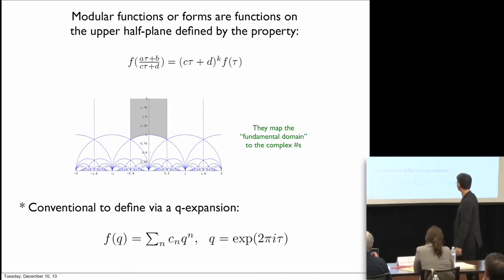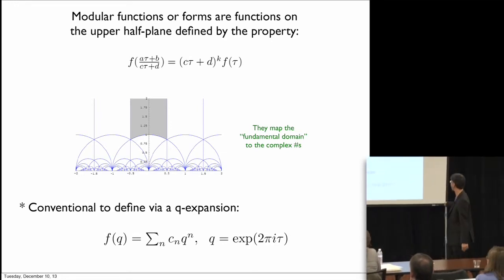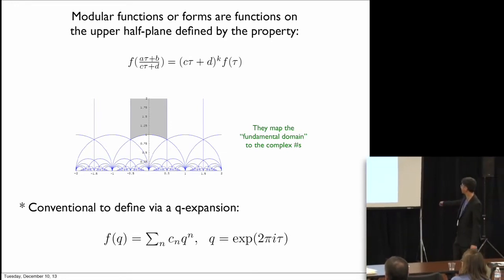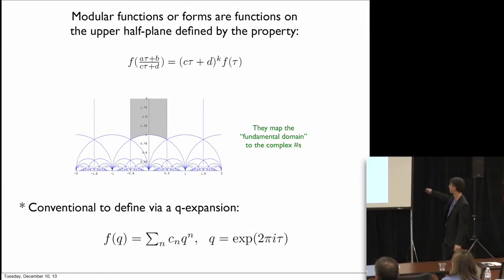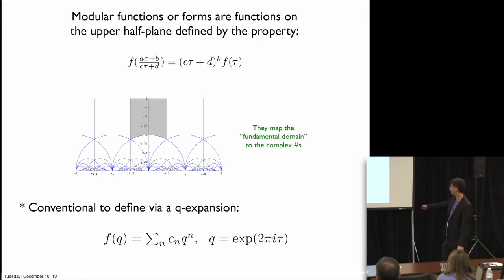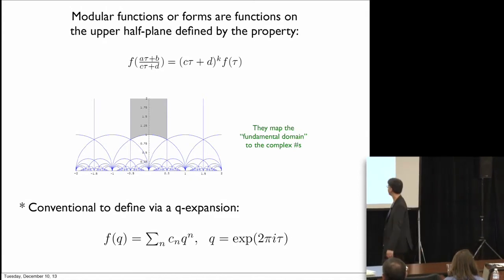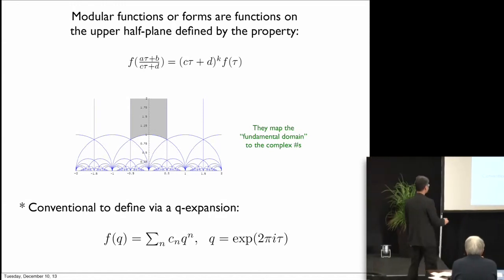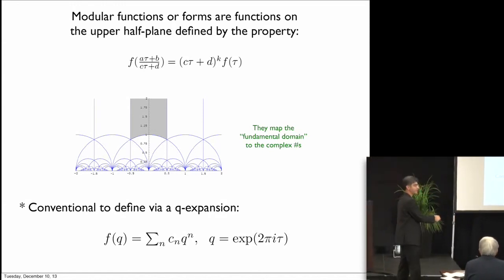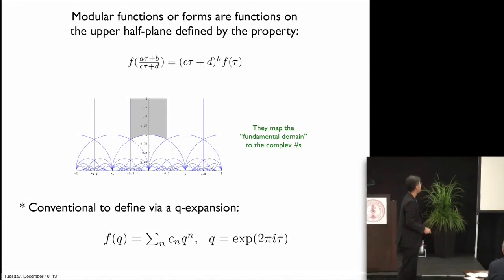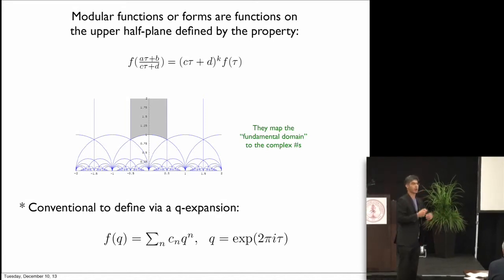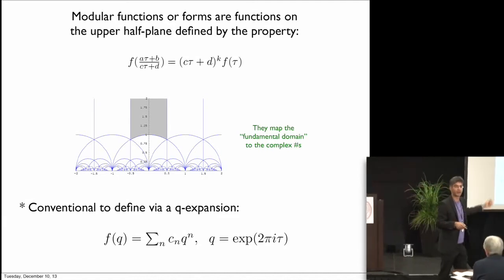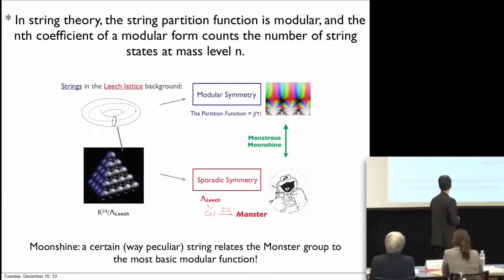These forms and functions are very interesting to mathematicians because they arise in number theory, where the highly constrained properties of modularity let you prove interesting theorems. It's conventional to define them by a q expansion — you set q equal to e to the i·tau, so it's automatically periodic under tau goes to tau plus 1. Then you Taylor expand and get some coefficients c_n. The original observation of monstrous moonshine is that these coefficients c_n for the simplest, most basic modular function — the j function — are controlled by dimensions of irreducible representations of the monster group, the unique largest finite simple group, from a totally different part of mathematics.